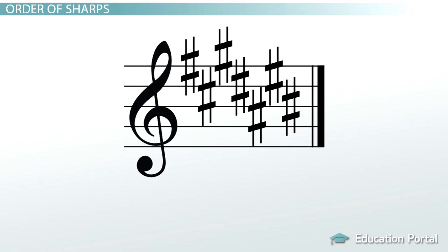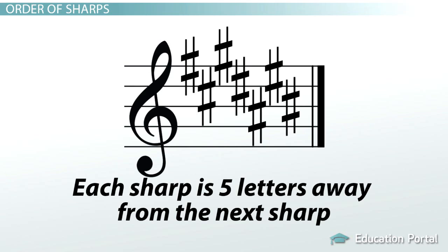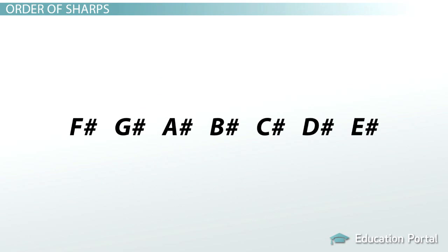If you're a numbers kind of person, you can simply count. When written alphabetically, each letter note listed in the order of sharps is exactly five letters away from the next sharp. So if we number these sharps, starting with F sharp is 1, G sharp is 2, A sharp is 3, B sharp is 4, and C sharp as 5, we can see that the fifth note away from F sharp is C sharp.